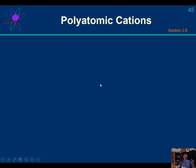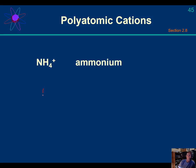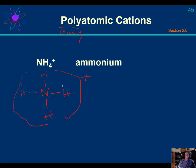Polyatomic cations — this is a short list. There is really just one you need to know: the ammonium cation, NH4+. It is polyatomic because it has many atoms (the prefix 'poly' means many). It has a positive charge, making it a cation. The ammonium cation is your polyatomic cation.